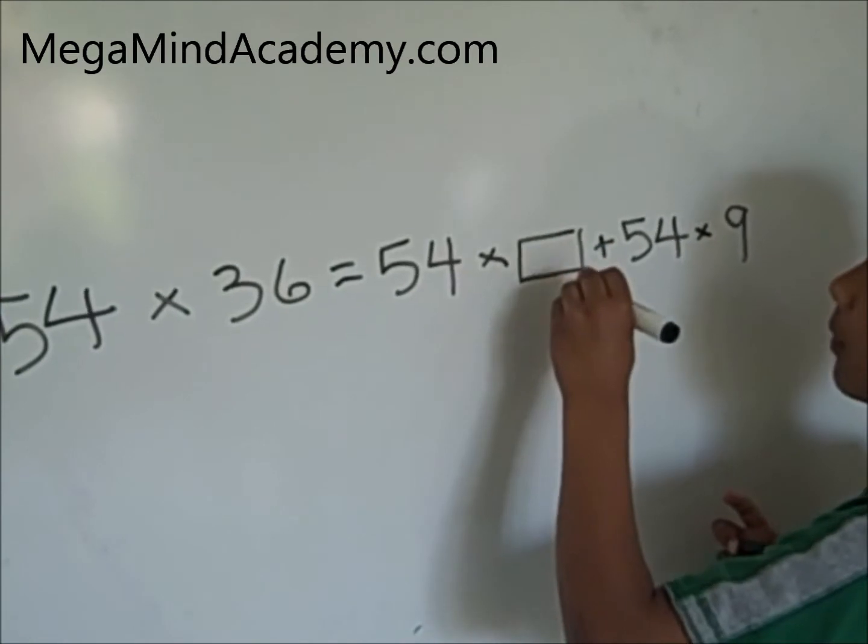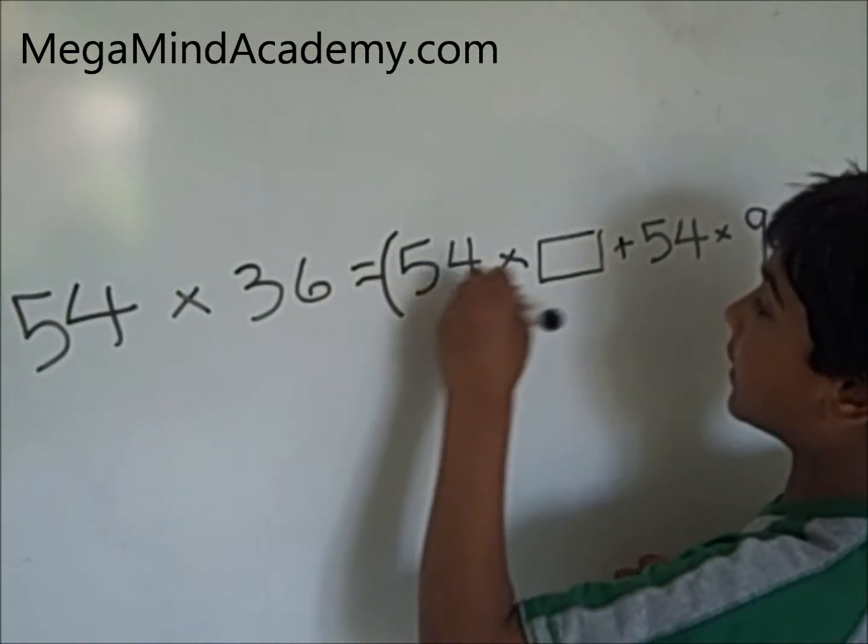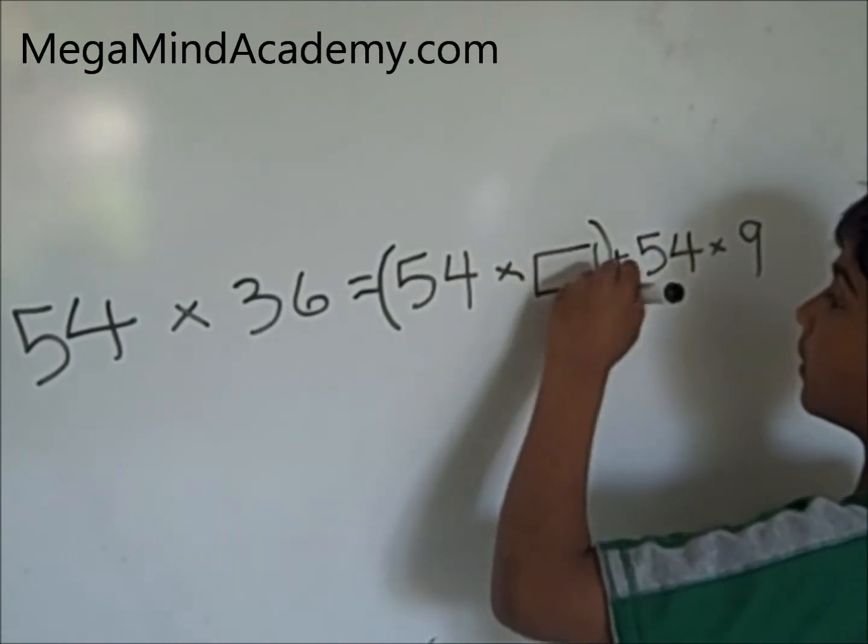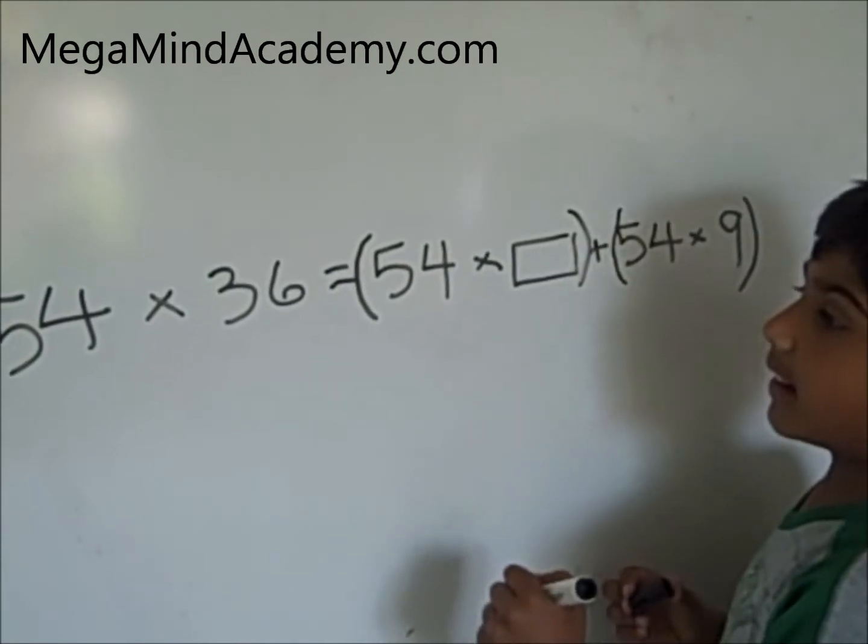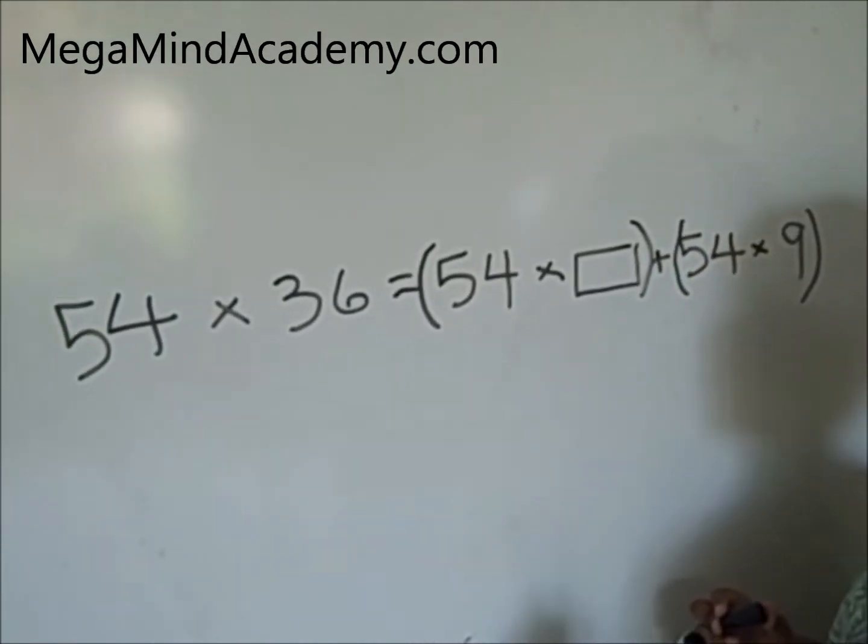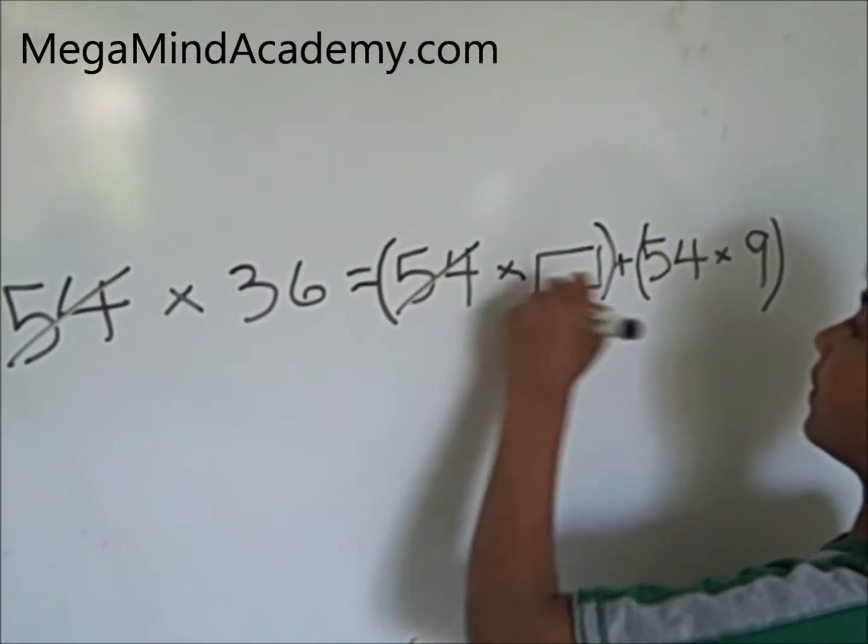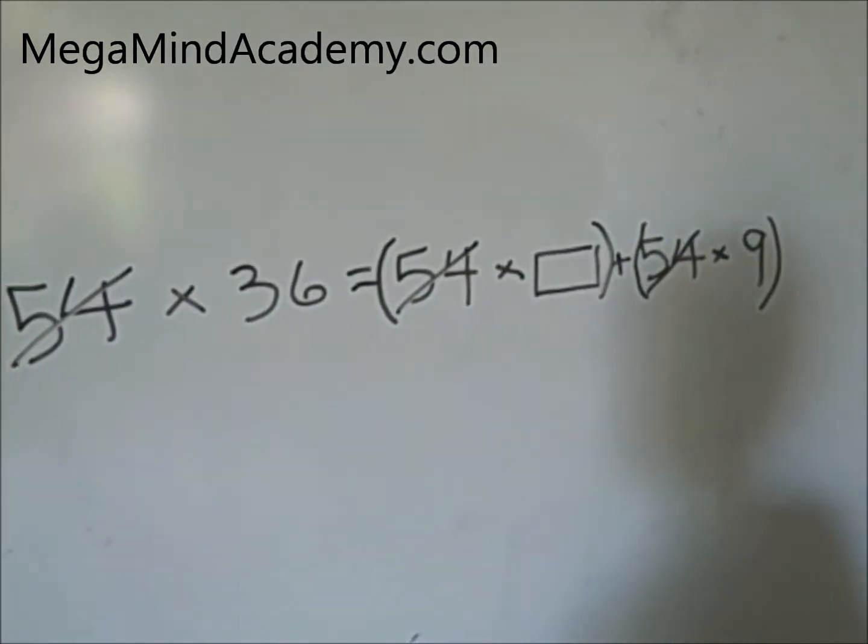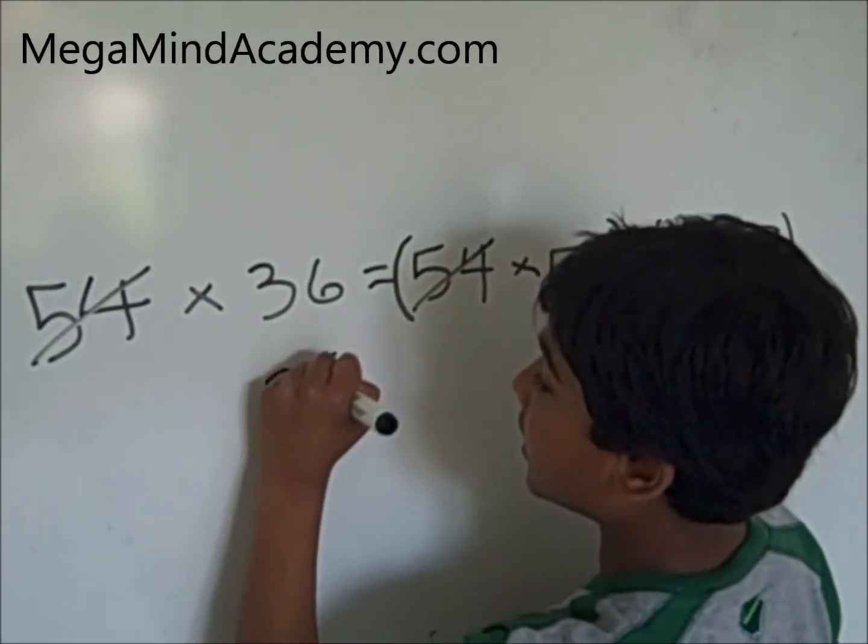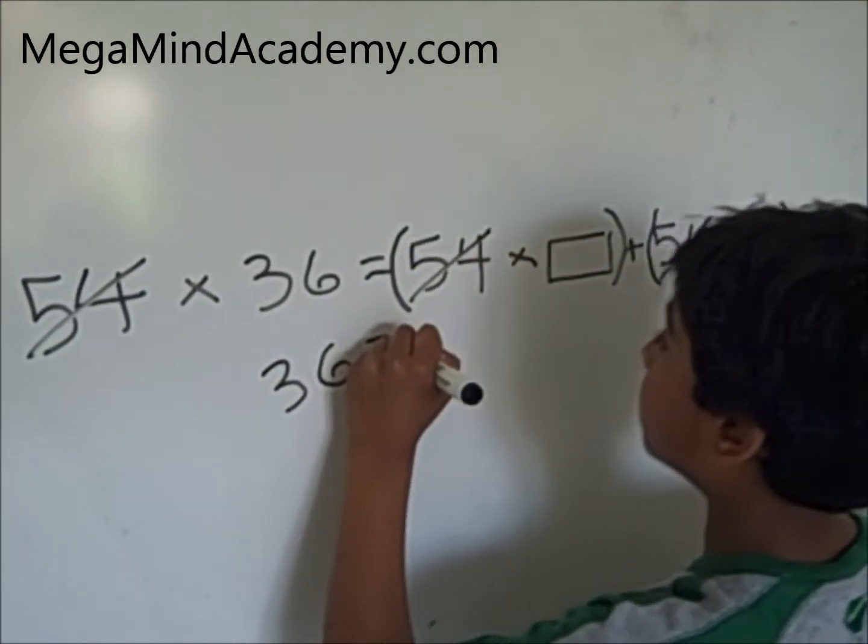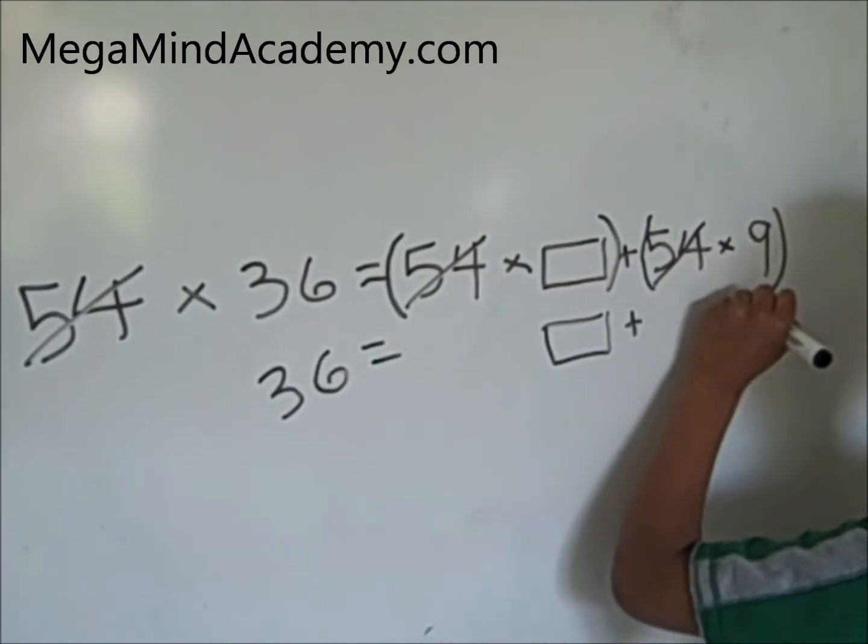Now we need to find out what is inside the box. Let's put parenthesis. And we need to cross out all the common factors. The common factors are 54, 54, and 54.